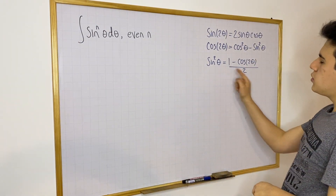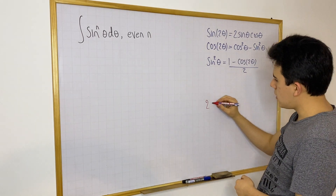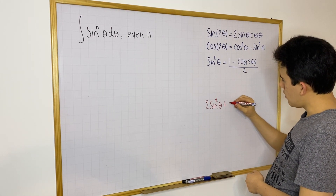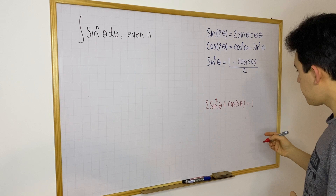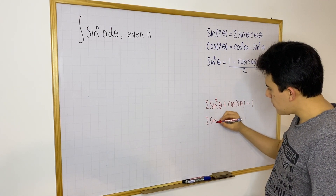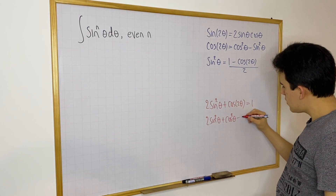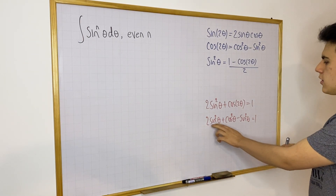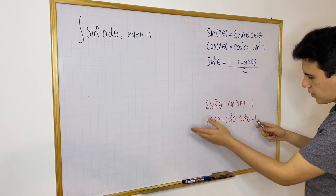Let me show you a quick proof. If you move 2 to the other side you get 2 times sine squared θ, and then moving cosine 2θ to the other side gives: 2 sin²θ + cos(2θ) = 1. Now rewrite cos(2θ) as cos²θ − sin²θ, so you have 2sin²θ + cos²θ − sin²θ = 1, which reduces to the familiar identity sin²θ + cos²θ = 1. That confirms this formula is true.